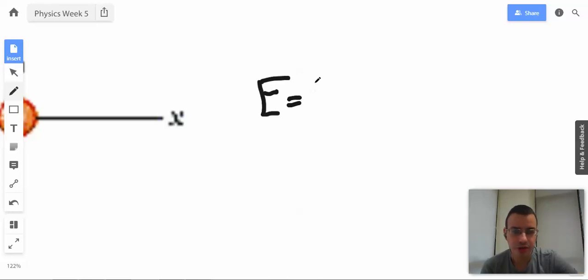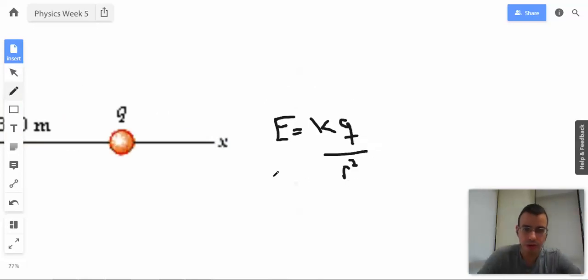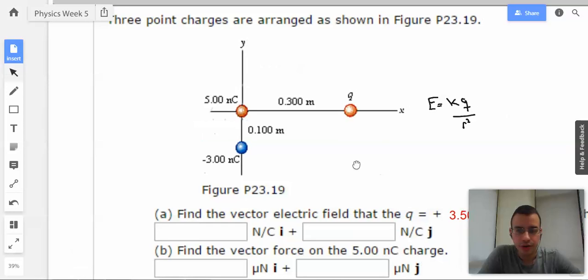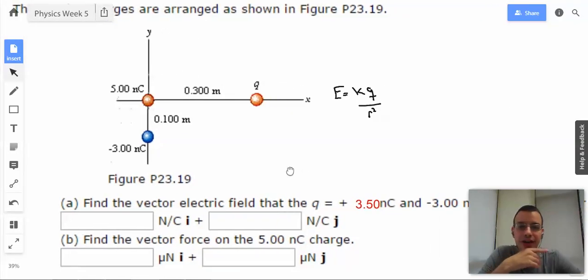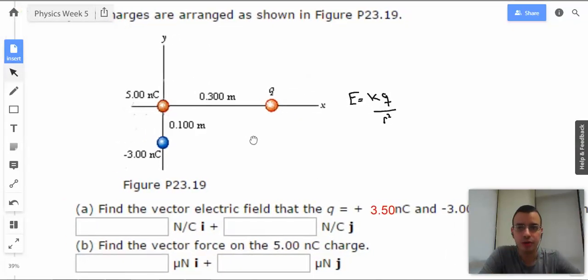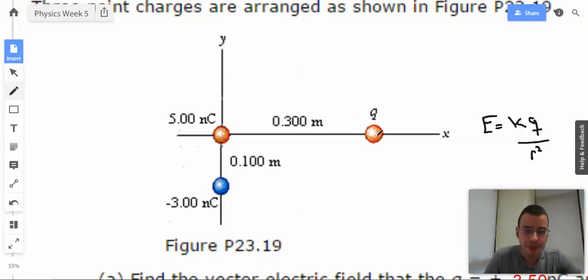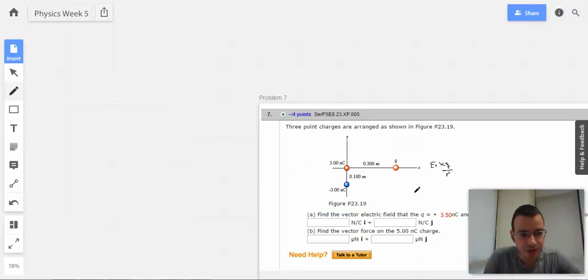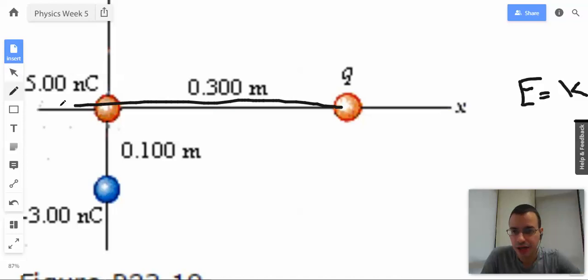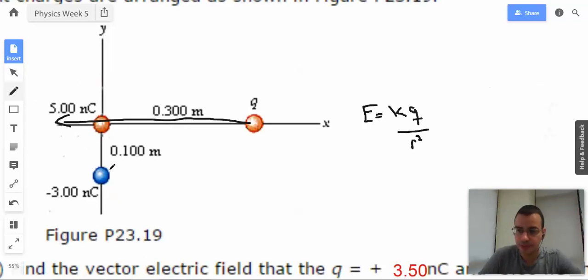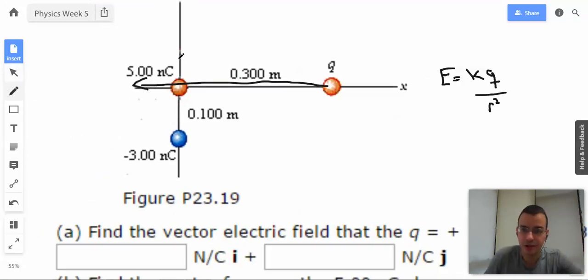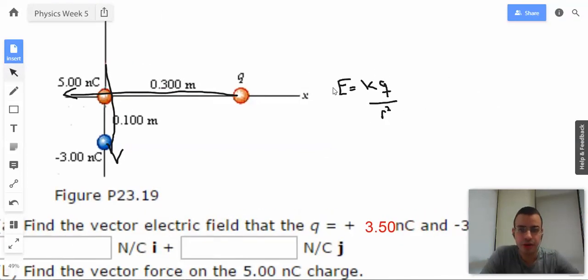Let's see, here, E equals KQ over R squared. There we go. So, now, we're going to find it for Q and that other one, the negative three guy. So, this guy is positive. Is he positive? He's positive. So, he's going to create an electric field going this way. And this guy is negative, so he's going to create an electric field going this way. I'm going to do them independently since they're both on the XY axis and it'll probably be easier.